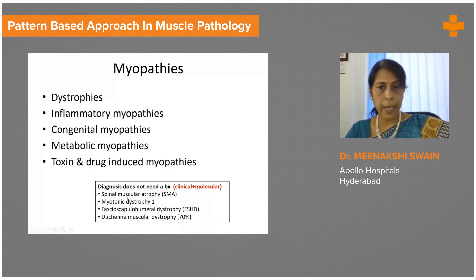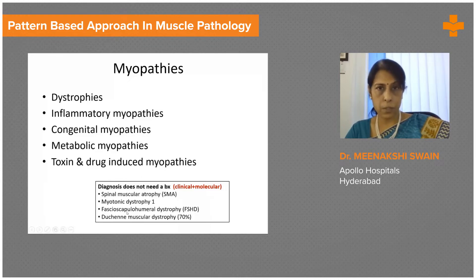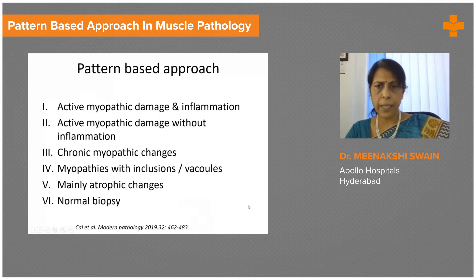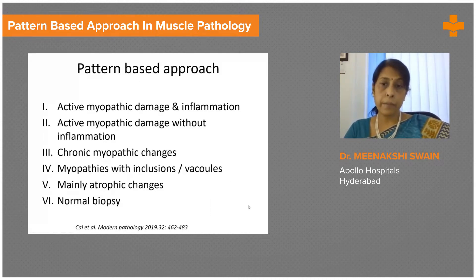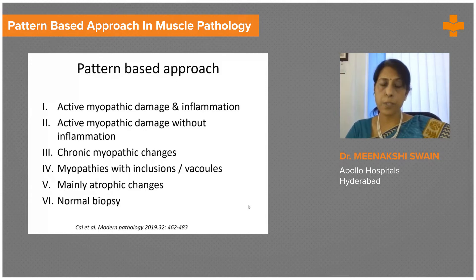The other conditions where you can make a diagnosis without a biopsy are spinal muscular atrophy, myotonic dystrophy 1, and facioscapulohumeral dystrophy. So these do not need a biopsy, and in the molecular area we are really able to arrive at a diagnosis without an invasive procedure.